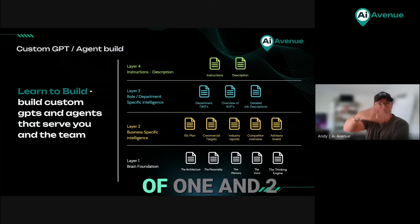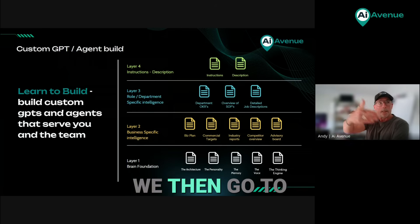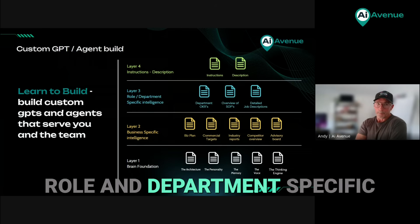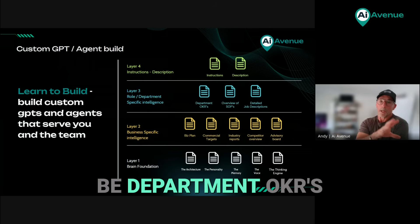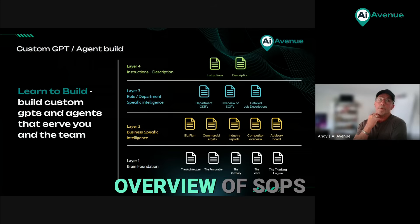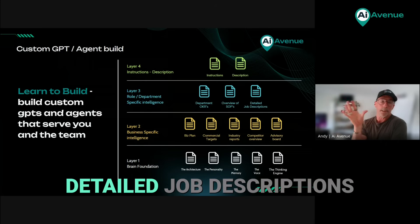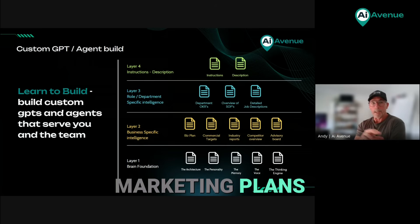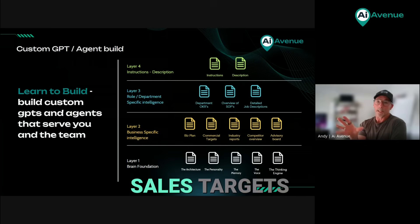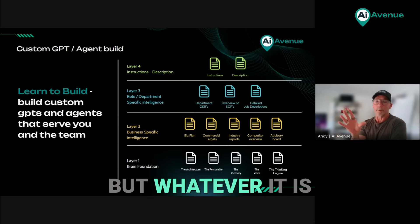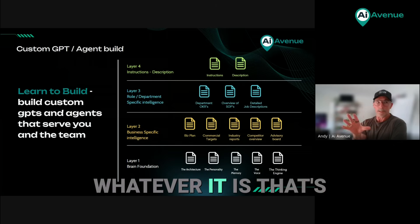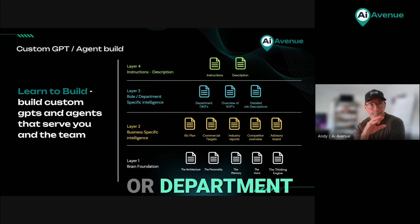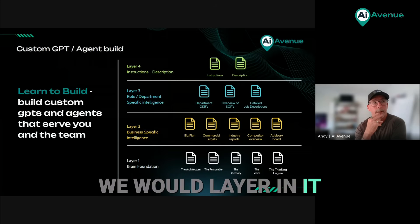Once we've built that layer in on top of layers one and two, we then go to role and department specific. This might be department OKRs, an overview of SOPs, detailed job descriptions, or it might be marketing plans, sales targets — whatever is relative to that role or department, we layer it in as layer three.